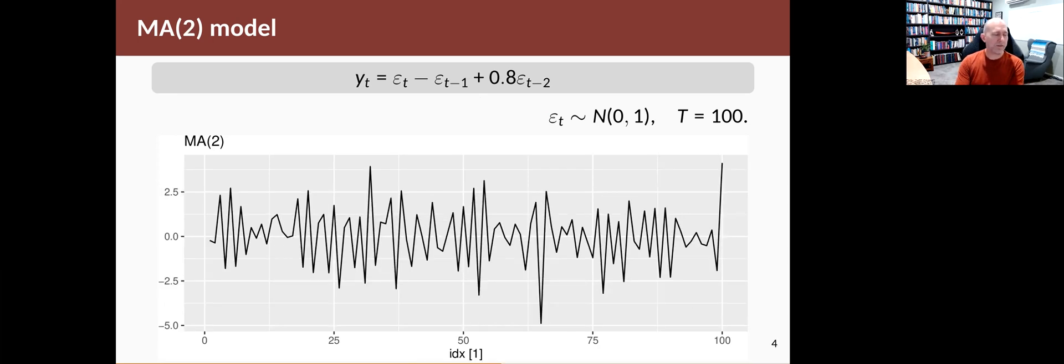The second one, the moving average of order two, looks quite different. This one looks like an oscillating series. The equation here is the current error minus the previous error plus 0.8 of the error before that. And again, the dynamics look sort of oscillatory, which is very different from the moving average of order one that we looked at before.